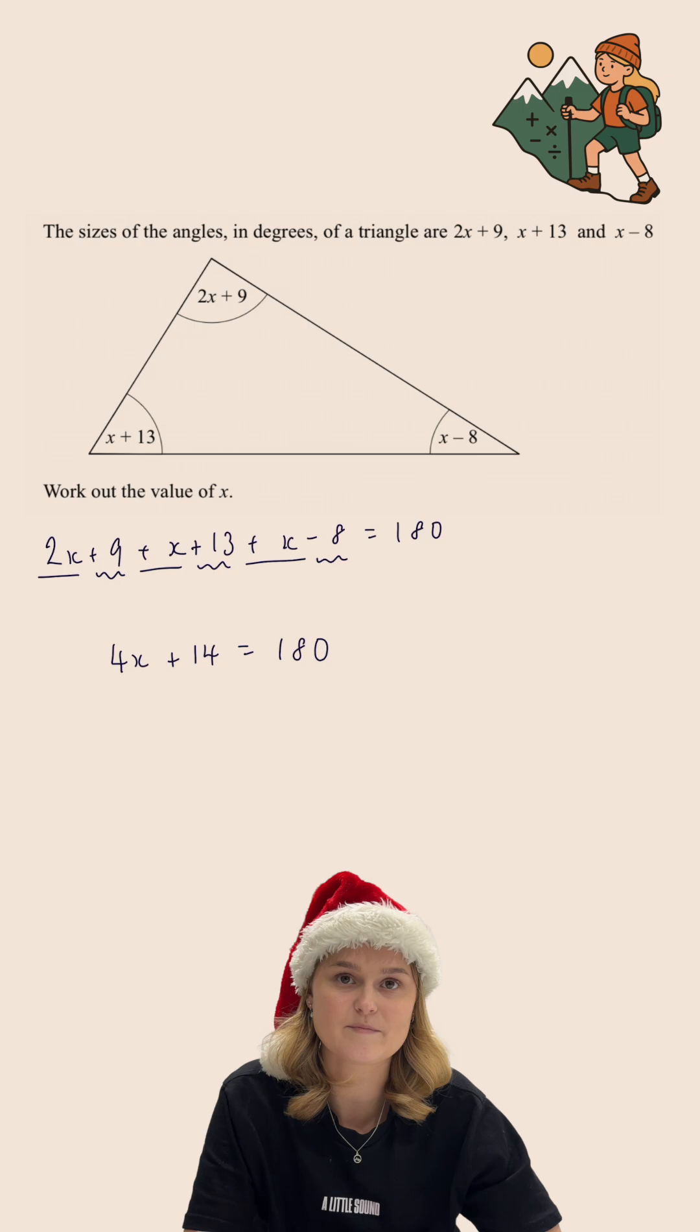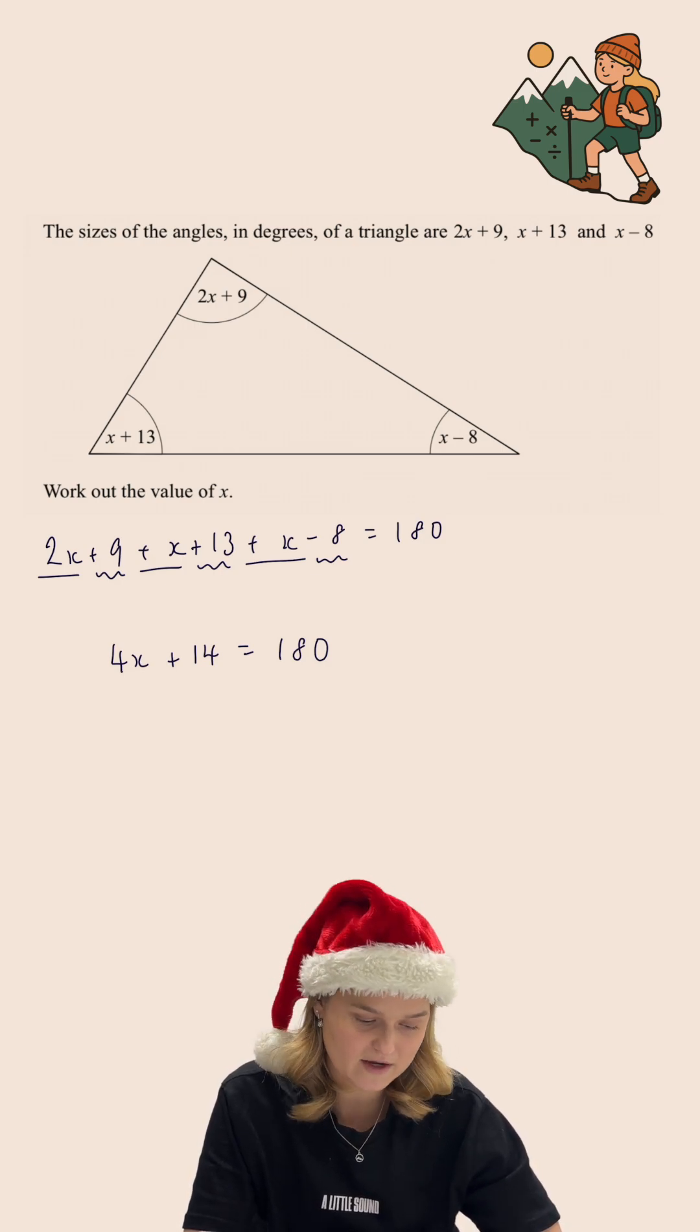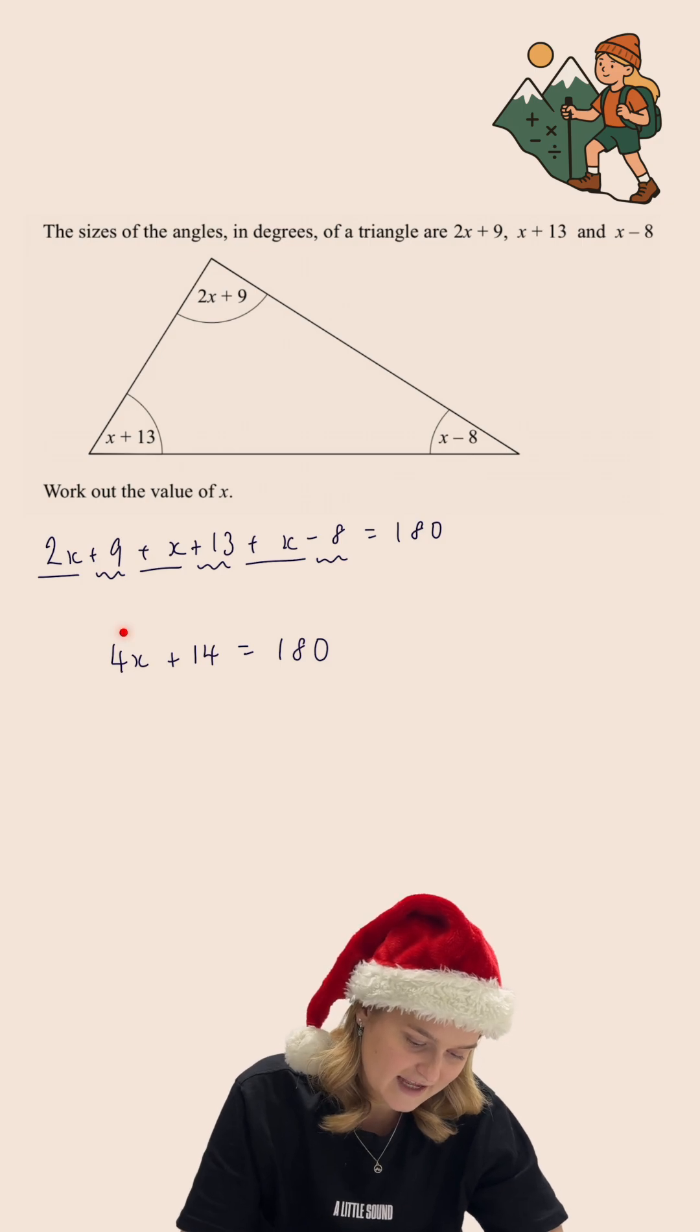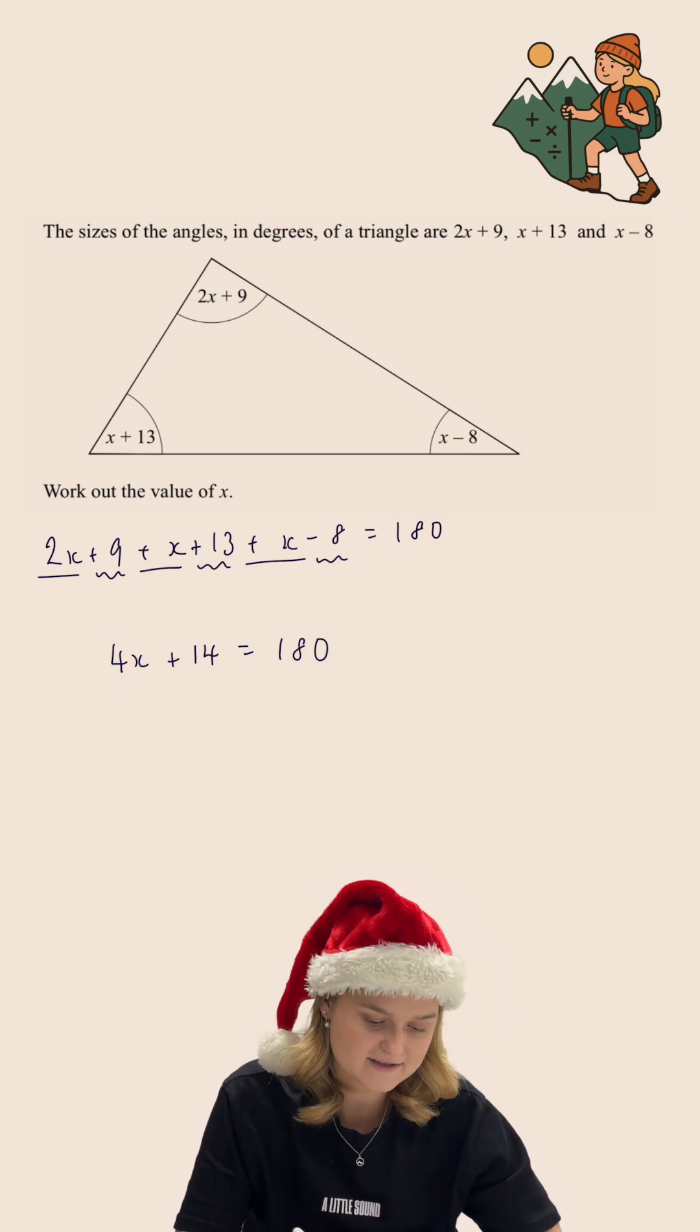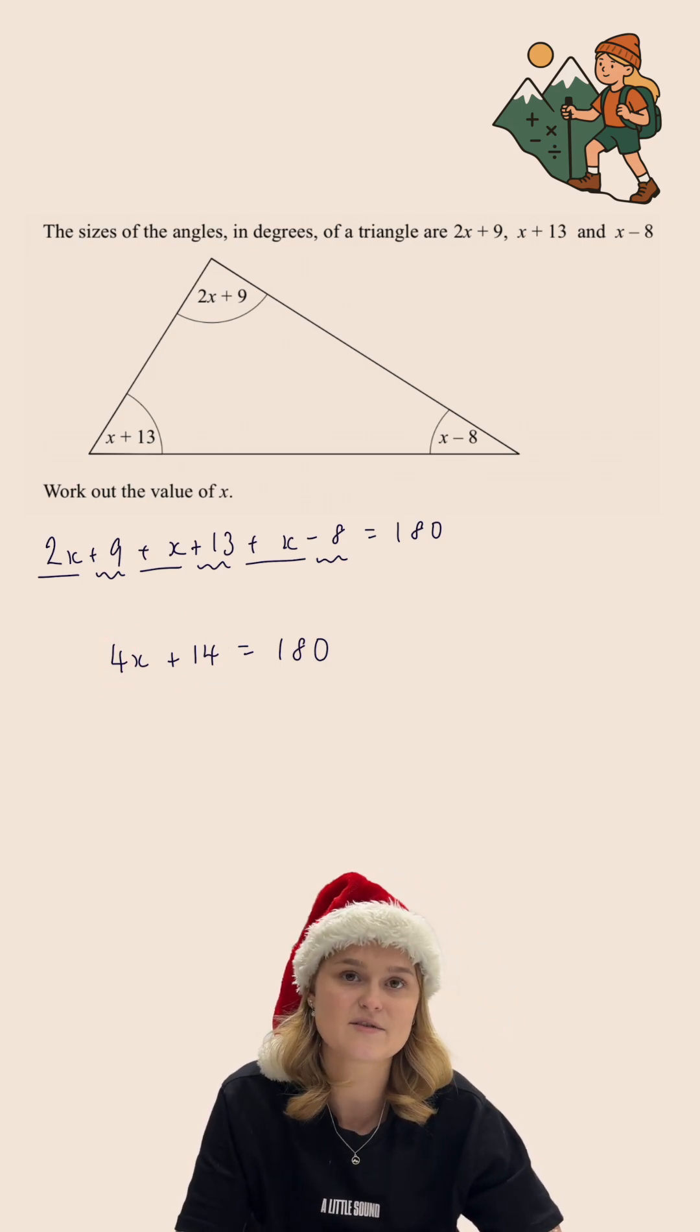And we now need to solve this equation. To do that we're trying to get x on its own on one side of the equation. So I need to get rid of the 4 that's in front of the x and get rid of the plus 14 that's on the end.